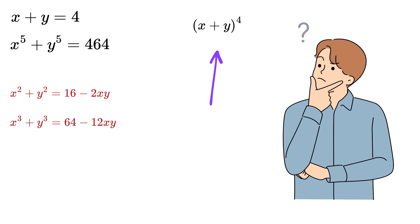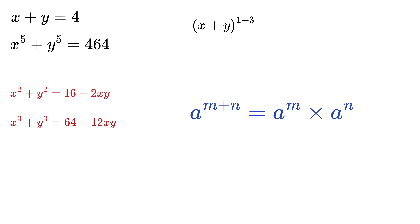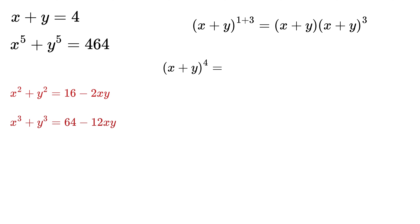Now, what about (x+y) raised to power 4 and higher powers? To expand them, we rewrite the exponent 4 as 1 plus 3. By the power law, a^(m+n) equals a^m times a^n, so (x+y)⁴ equals (x+y)¹ times (x+y)³. This gives us a way to break down higher powers using lower ones we already know.